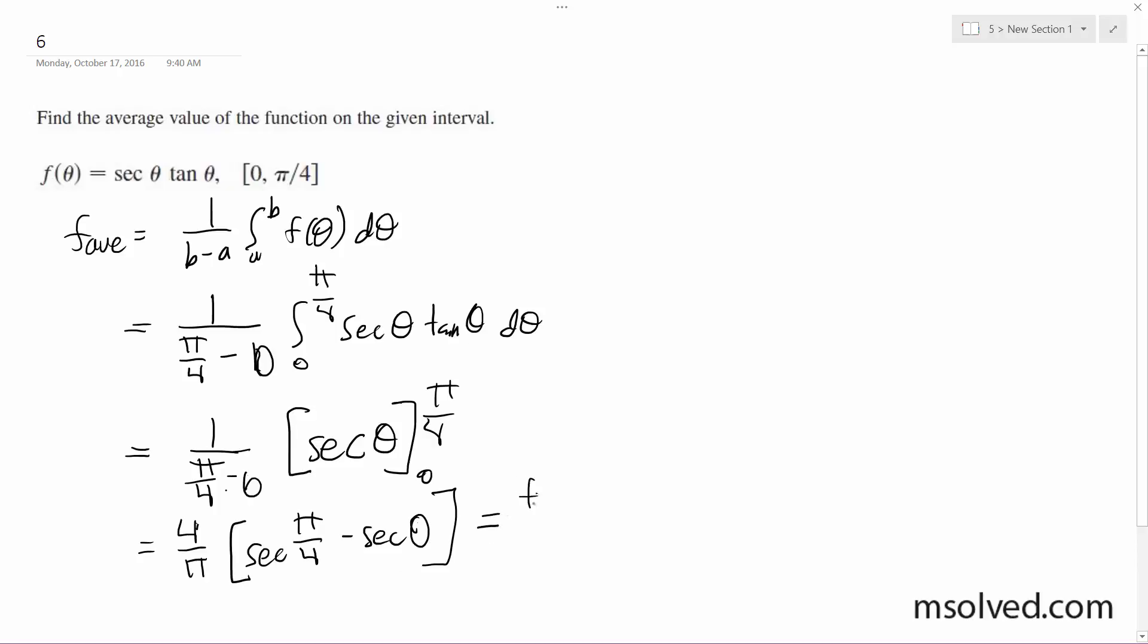The function average ends up being equal to 4 over pi. Secant of pi over 4 is square root of 2, and the secant of 0 is 1. That's the average value.